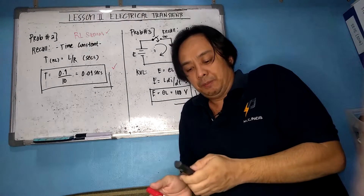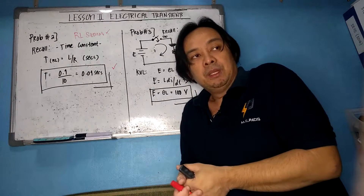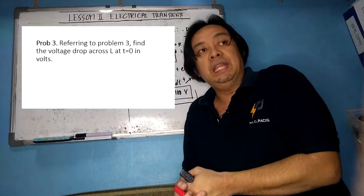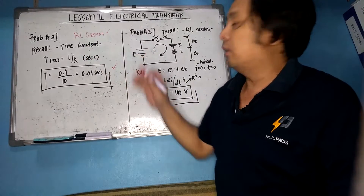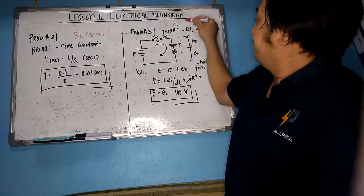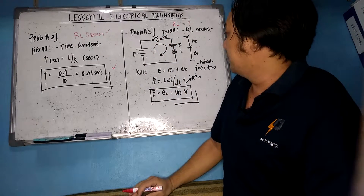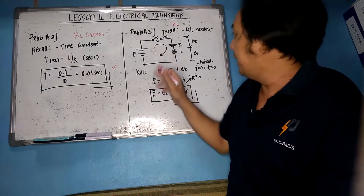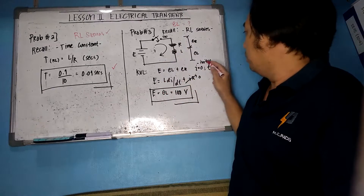Problem number three refers to the last problem. We need to find the voltage across L at time equal to zero in volts. In the RL series circuit, you have a source E, a switch, a resistance, and an inductor L, with voltages E_R and E_L. Our main goal is to get E_L at time equal to zero.